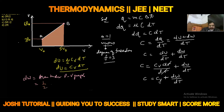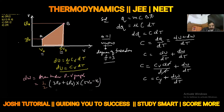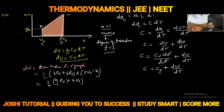Area of trapezium = half of sum of parallel sides into separation between them. The parallel sides are 3P₀ and 6P₀, and the separation is 5V₀ − V₀ = 4V₀. So work done = half × 9P₀ × 4V₀ = 18P₀V₀.